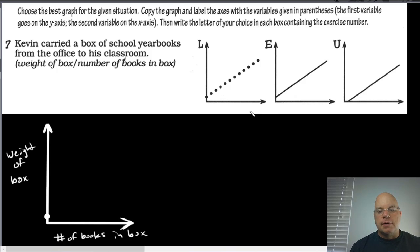It's either L or E, but then the question is why does E have this continuous line going up this way and L has this discontinuous series of points? I have to think about this. When there's one book in the box, the box weight is going to go from, let's say the box weighed one pound. And just to keep it simple, let's say every book weighs one pound, every yearbook weighs one pound.